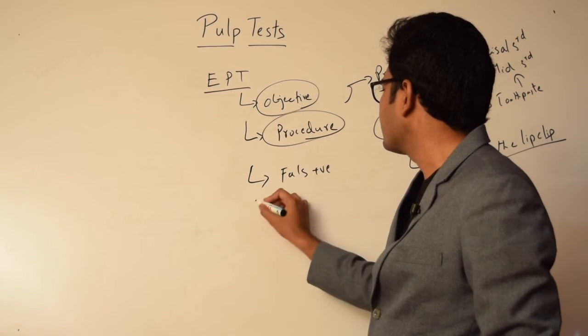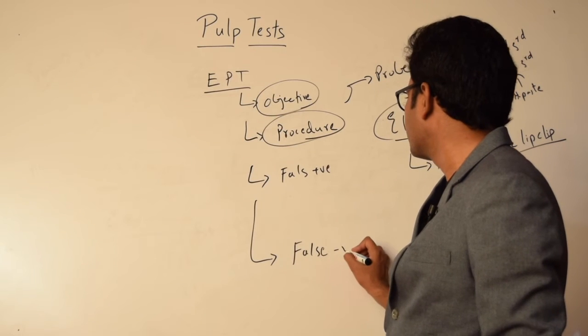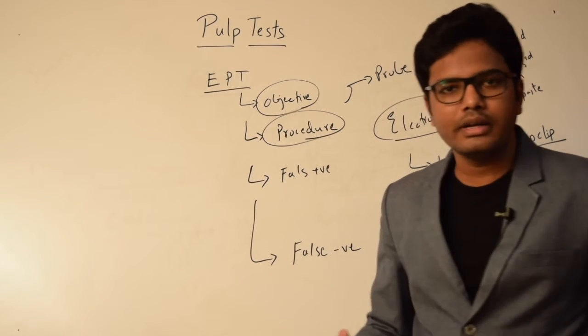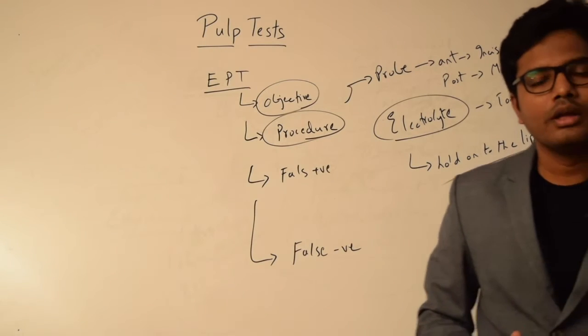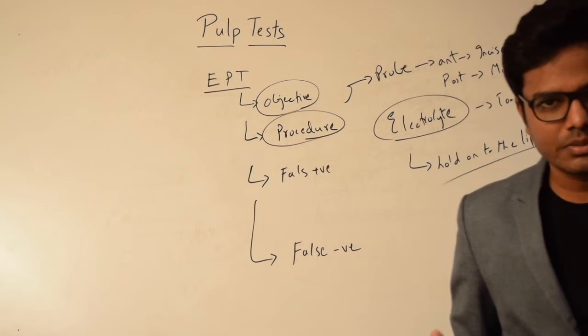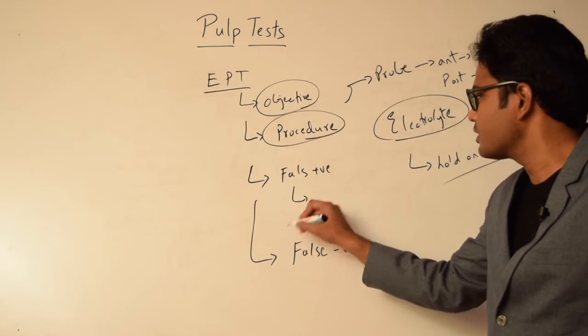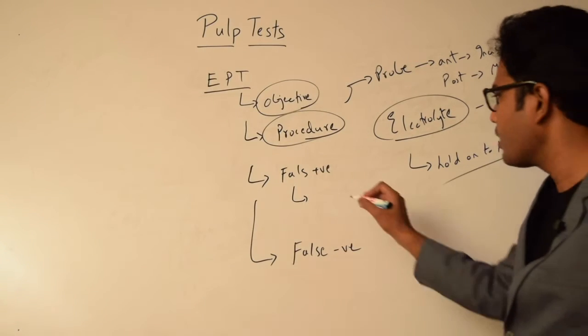We have something called false positive and false negative responses. The drawback of EPT is that even though the results are reliable, there can be a chance for false positive and false negative responses because of the following reasons.